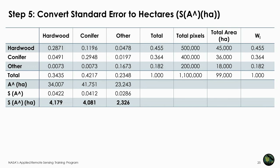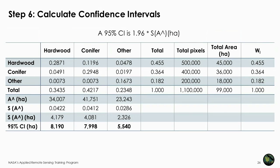The next step is to calculate the confidence intervals for each class. There is a lot of information in the literature about how to decide on a confidence interval. A standard confidence interval is 95%, which means there is a 95% probability that the true value lies within that interval. The 95% confidence interval is calculated by multiplying 1.96 by the standard error. For hardwoods, multiplying 4,179 hectares by 1.96 gives 8,190 hectares.